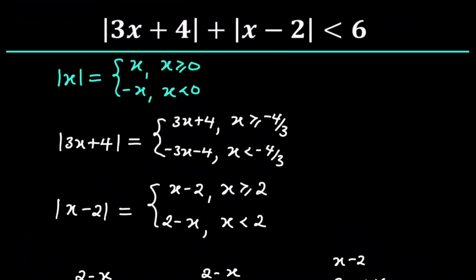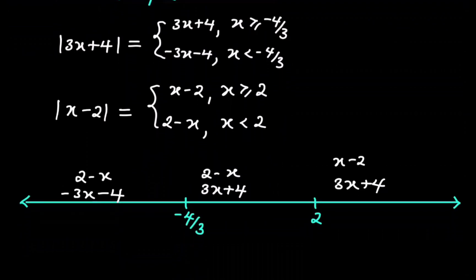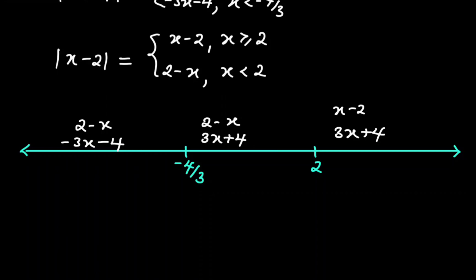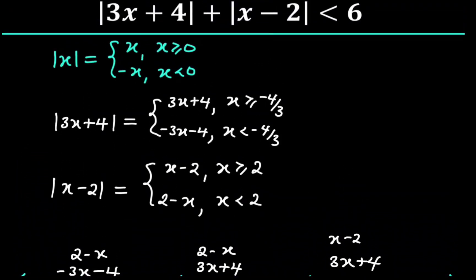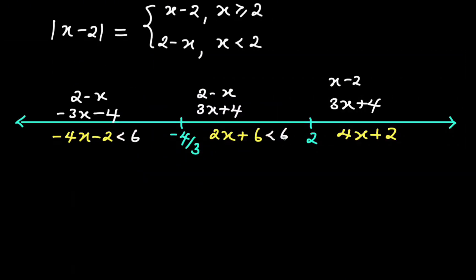We were told that the absolute value of 3x plus 4 plus the absolute value of x minus 2 is less than 6. So we add the two expressions in each region. In the first case we have 2 minus x plus negative 3x minus 4, which gives negative 4x minus 2. In the second case we have 2 minus x plus 3x plus 4, which gives 2x plus 6. In the third case we have x minus 2 plus 3x plus 4, which gives 4x plus 2. Each of these sums is less than 6.